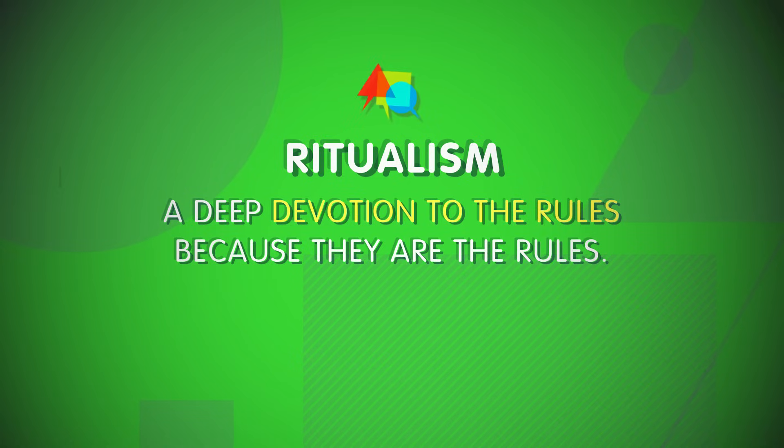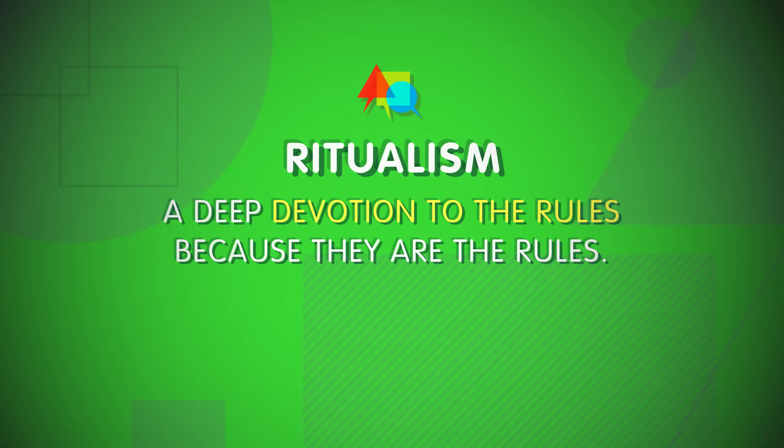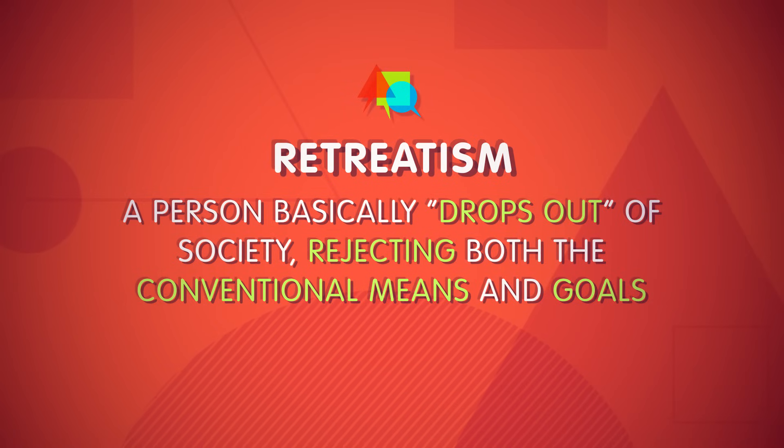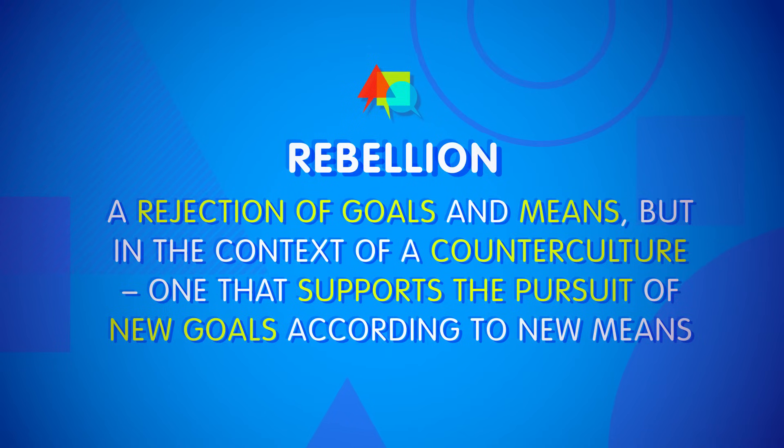You might also respond in the opposite way – by giving up on the goal of economic success – and instead committing totally to following the rules. You might decide that you may never be rich, but at least you're not going to be deviant. Merton called this ritualism – a deep devotion to the rules, because they are the rules. Your other option is to reject the whole system altogether – the means, the goals, all of it. In this response, which Merton labeled retreatism, a person basically drops out of society. Merton classed drug addicts and alcoholics in this group, seeing these addictions as a way of escaping the pressures of goals and means. But rejection can also be constructive – rebellion is a rejection of goals and means in the context of counterculture, supporting the pursuit of new goals according to new means. The artist who doesn't want financial success but pursues recognition from their peers is an example of this.